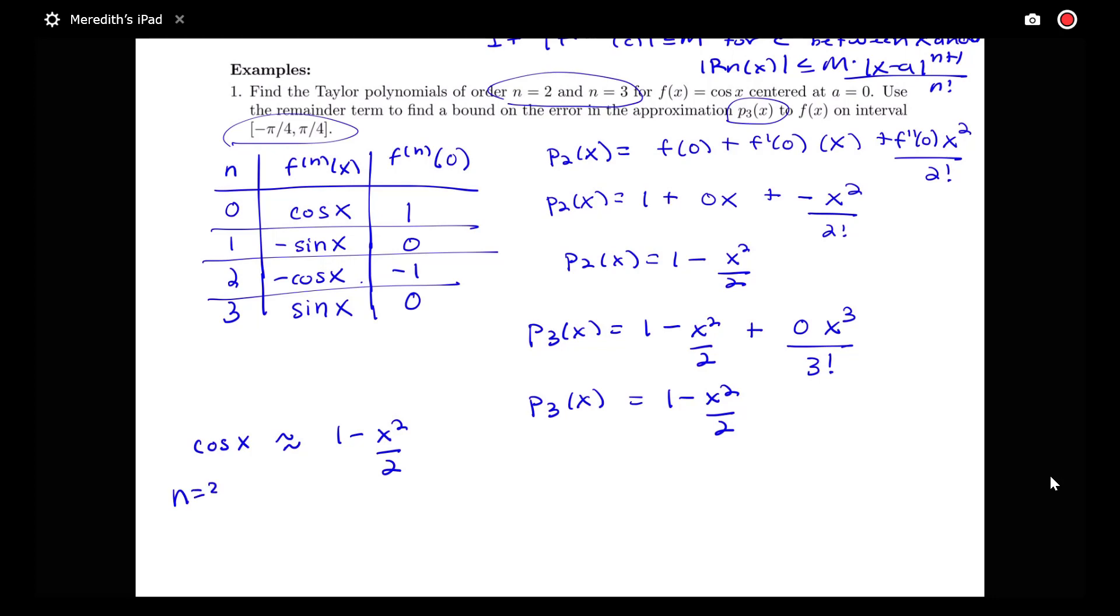Well, since n is equal to 3 here, I'm going to need to get a bound on my fourth derivative. So notice that my third derivative was sine x. So my fourth derivative is equal to cosine x. My interval of interest here again is this negative pi fourths to pi fourths. That's actually an interval around my center a equals 0.